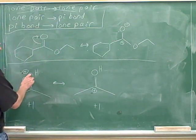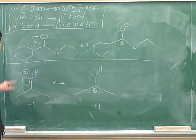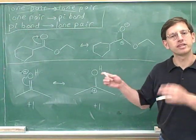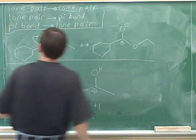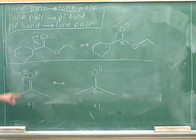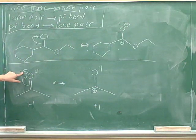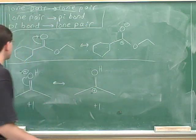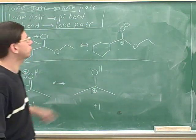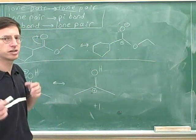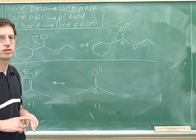Even though this oxygen was gaining electrons, it did not become negative because it had already started with a positive charge. Remember that we can only change the charge by one step. If the charge starts off at zero, we can move it one step more negative to be a negative one charge. Or if the charge starts at positive one, it can become one step more negative, which means a zero formal charge. But there's no way we can go from a positive charge all the way to a negative charge — that would be two steps. That's not how electron pushing arrows work.